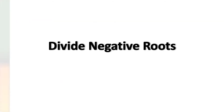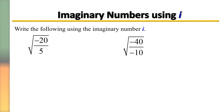Now let's move on to dividing negative roots. The first example is the square root of negative 20 divided by 5. First, simplify the division under the radical: negative 20 divided by 5 equals negative 4. The square root of negative 4 equals 2i.